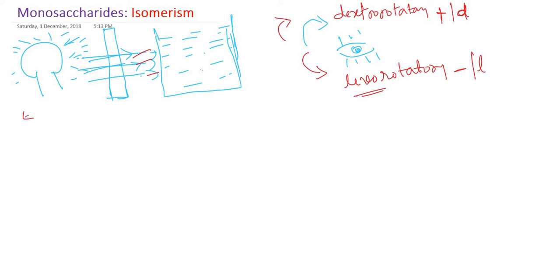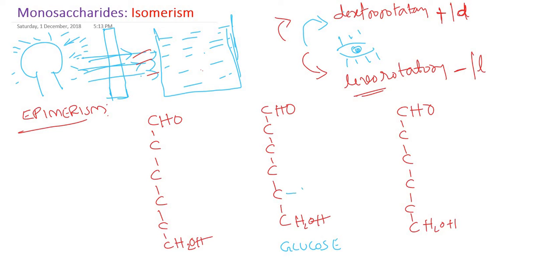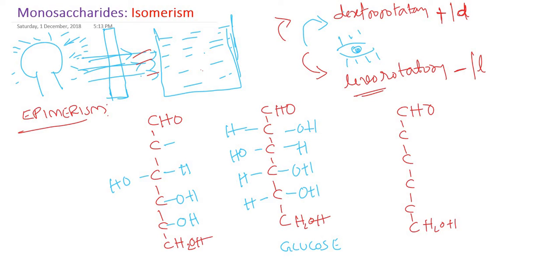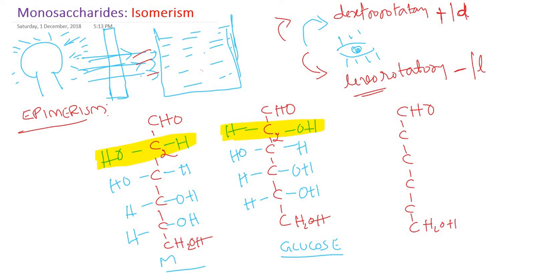The next isomerism is epimerism. Starting with the Fisher's projection of glucose — OH on carbon four and five on the right-hand side, then alternating. Now if I write the same structure but place OH on carbon number two on the left-hand side instead of the right, all other positions remain the same. This new molecule is called mannose. So glucose and mannose differ only at carbon number two.